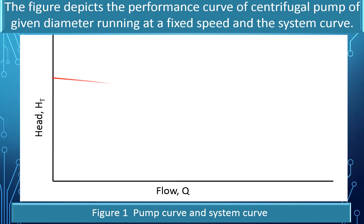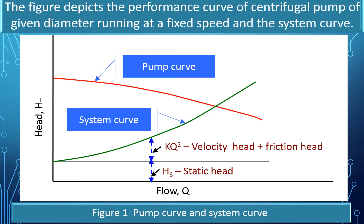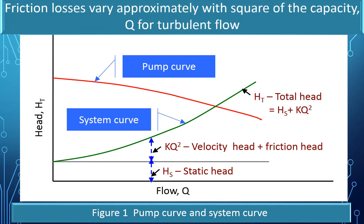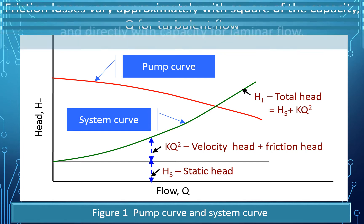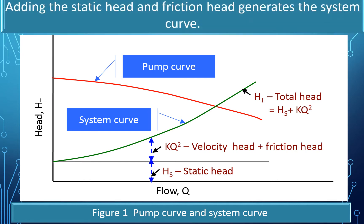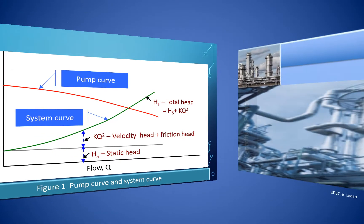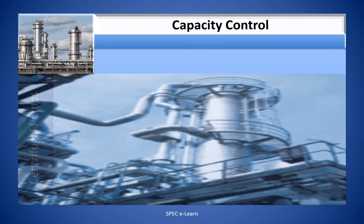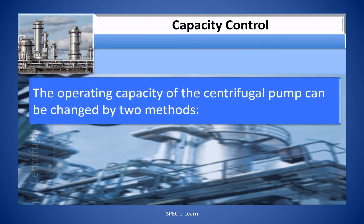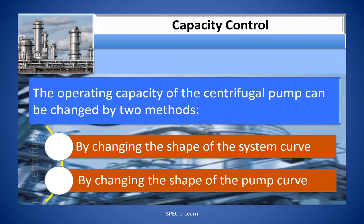This figure depicts the performance curve of a centrifugal pump of a given diameter running at a fixed speed and the system curve. Friction losses vary approximately with the square of the capacity Q for turbulent flow, and directly with capacity for laminar flow. Adding the static head and friction head generates the system curve. Operating capacity of the centrifugal pump can be changed by two methods: one, by changing the shape of the system curve; two, by changing the shape of the pump curve.